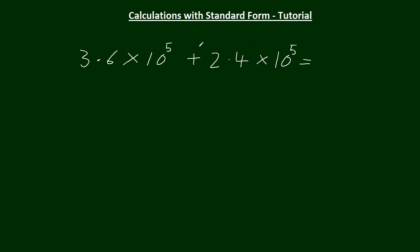We've got 3.6 times 10 to the 5 and 2.4 times 10 to the 5. They're both 10 to the 5. So what we need to do is add these two numbers together, the 2.4 and the 3.6. So that's going to be 6, and the 10 to the 5 stays as it is. It's 6 times 10 to the 5.